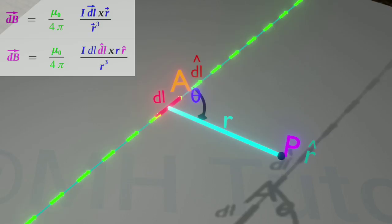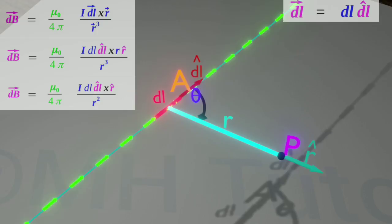After noting all these, the Biot-Savart law can be written like this. Here, DL and cap DL are the magnitude and direction of the vector DL, respectively. And R and cap R are the magnitude and direction of the vector R, respectively.